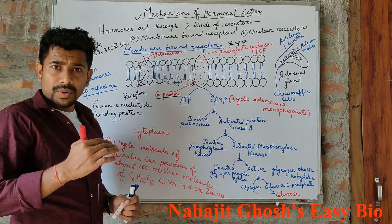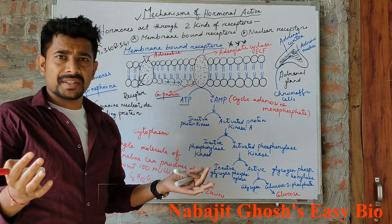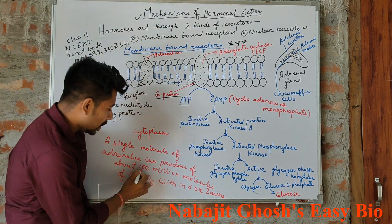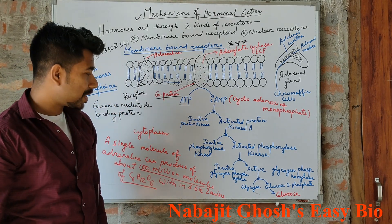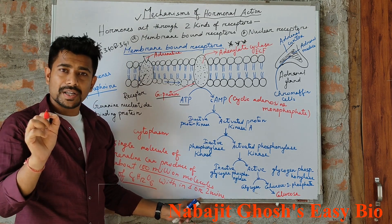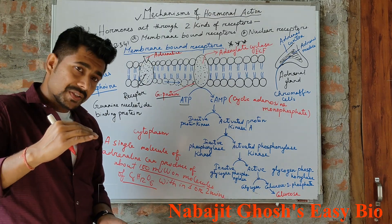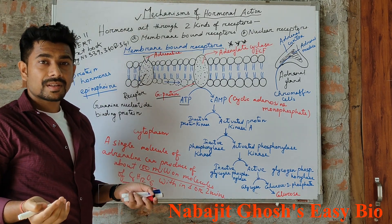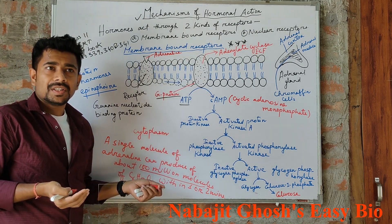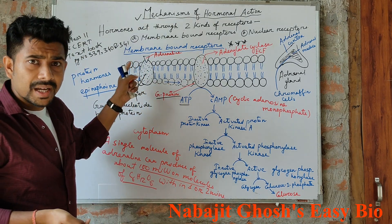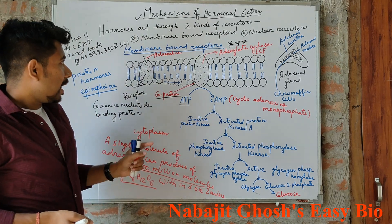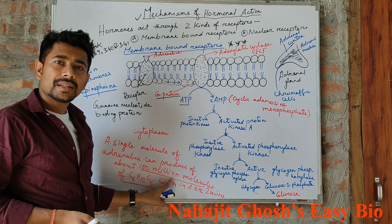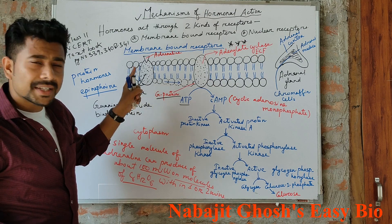When this hormone is produced, your body becomes more energetic. Why? Because a single molecule of adrenaline can produce 100 million molecules of glucose within one or two minutes. When adrenaline hormone is secreted, the blood glucose level also increases. It also accelerates the rate of respiration. It also accelerates the heartbeat. So blood glucose level is high due to adrenaline hormone acting through this membrane bound receptor mechanism.